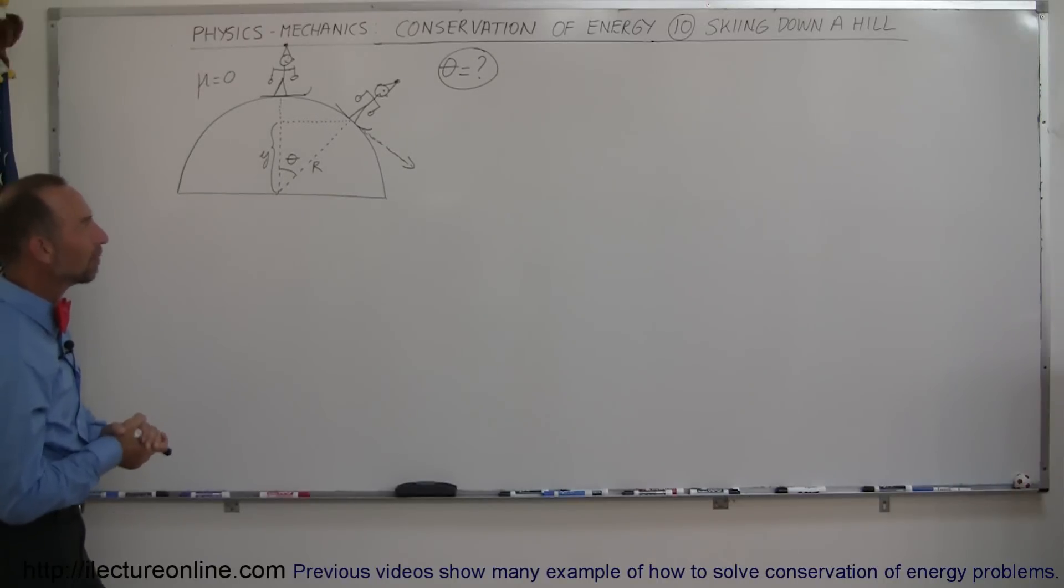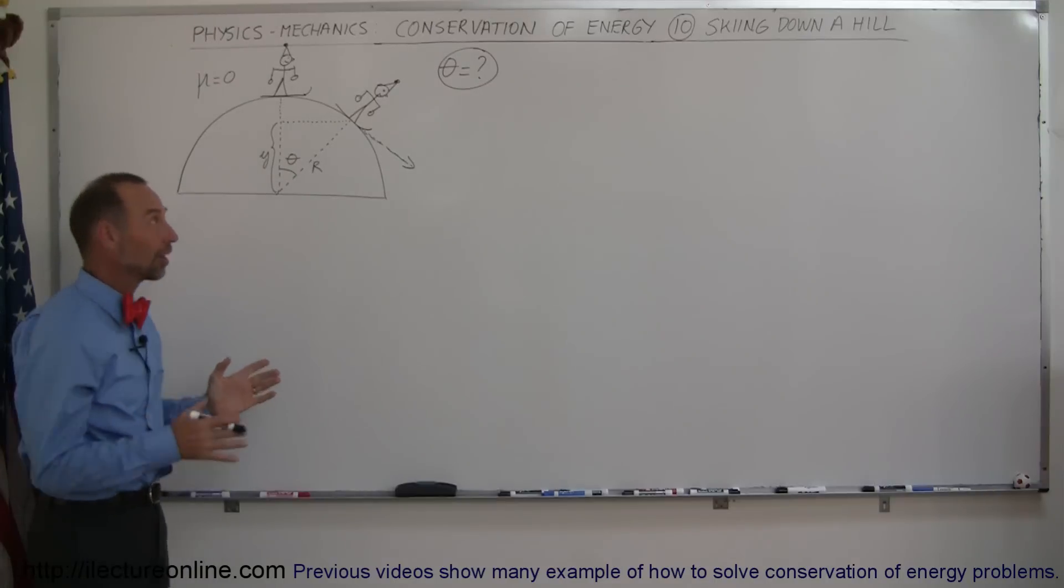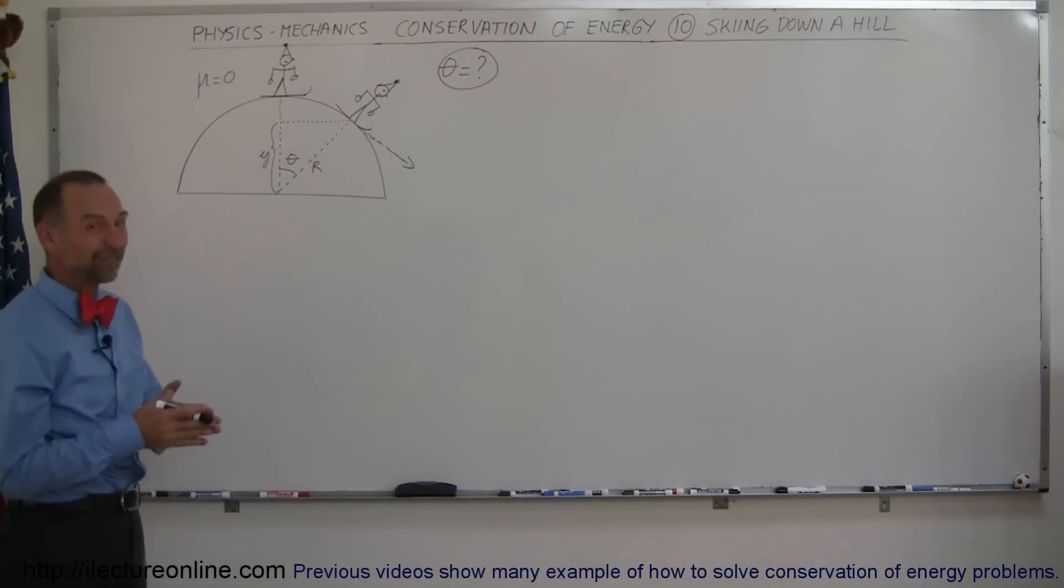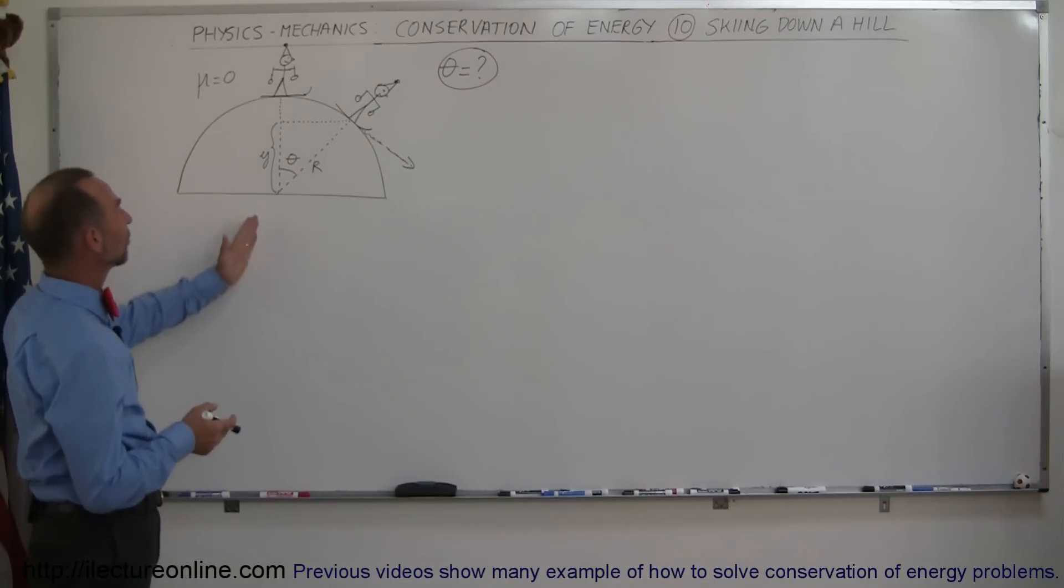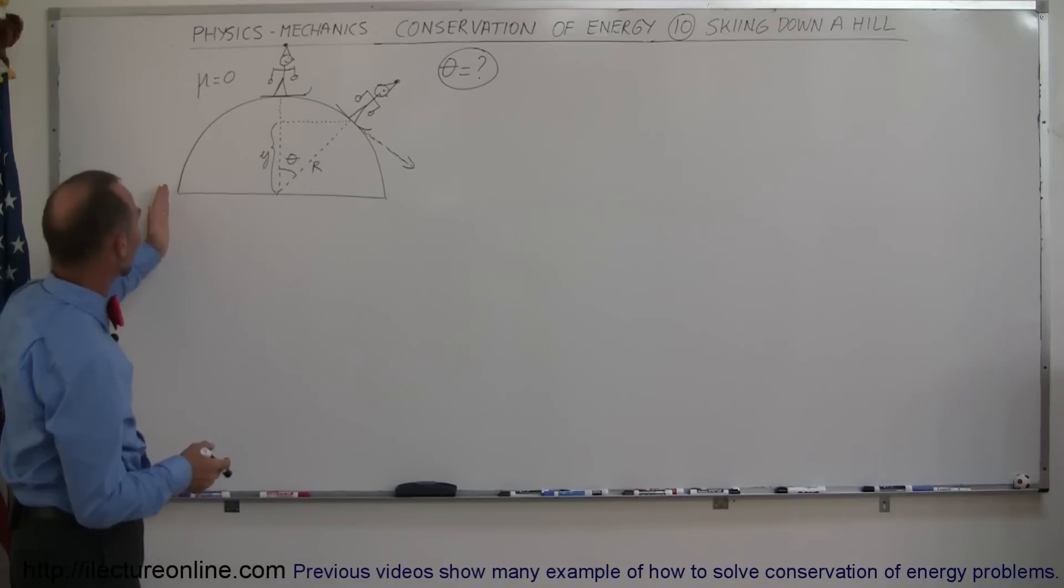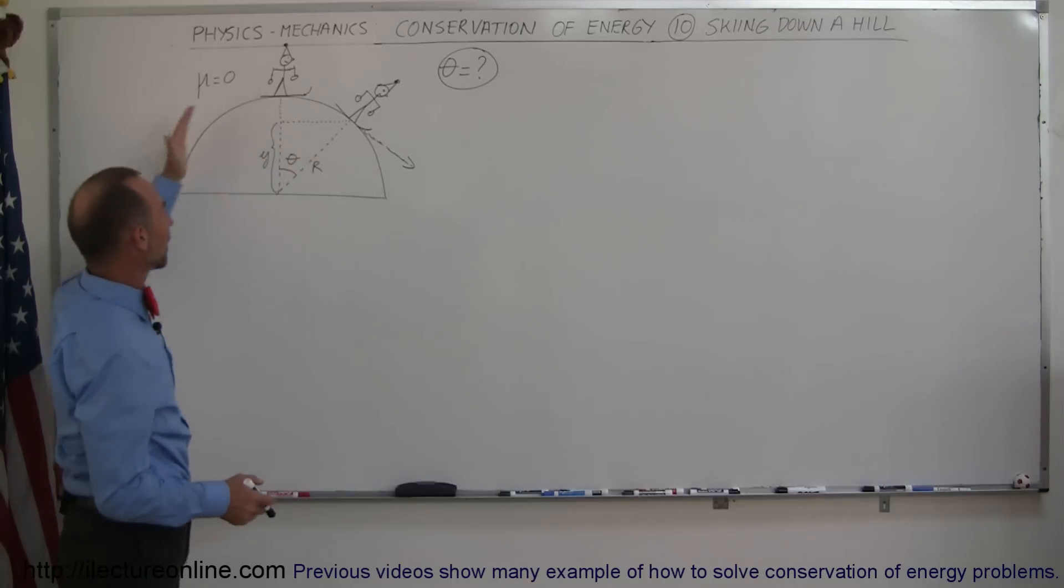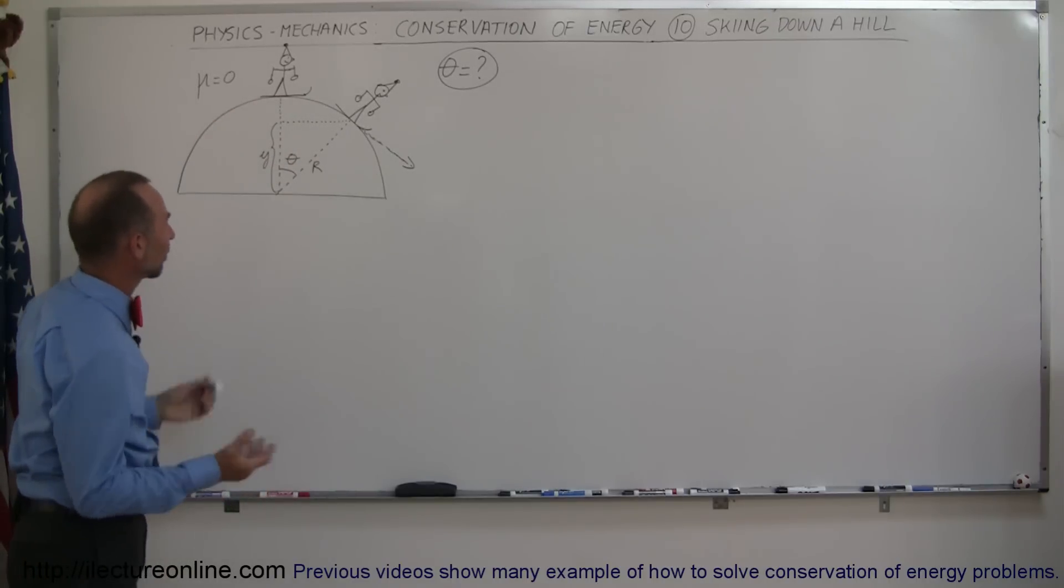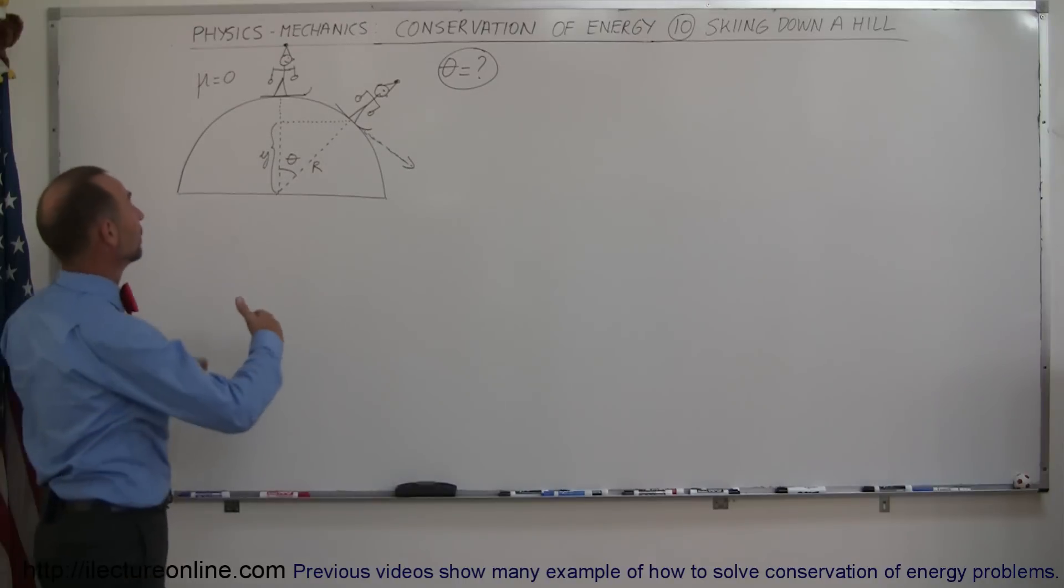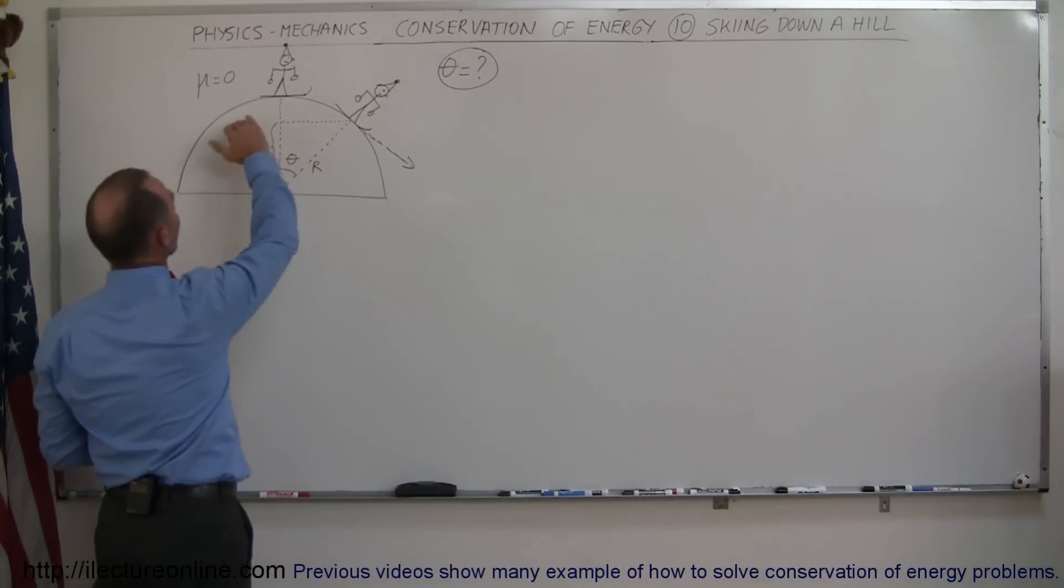Here's our tenth example of how we use the conservation of energy to solve a problem that otherwise would be a lot more difficult to solve. So here we have a skier on an interesting hill. It's like a semi-dome, or I guess it would be a dome, not a semi-dome, but a dome-shaped ski hill.